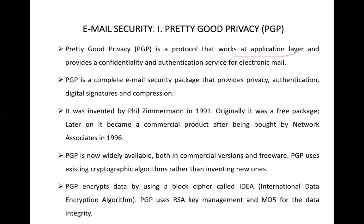PGP works at the application layer of the OSI model, that is layer number 7, and it provides confidentiality and authentication. Confidentiality means nobody has read or opened your mail, and authentication means only the intended recipient can access it. PGP covers authentication, privacy, digital signatures, and compression. Authentication, digital signatures, confidentiality, and integrity will be discussed in detail in the next topic on network security.